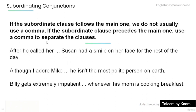Also remember: if the subordinate clause follows the main one, we do not usually use a comma. And if the subordinate clause precedes the main one, make sure to use a comma to separate the clauses. Now read the following sentences and fill in the blanks using the appropriate punctuation. 'After he called her, Susan had a smile on her face for the rest of the day' — comma. 'Although I adore Mike, he isn't the most polite person on earth' — comma. 'Billy gets extremely impatient whenever his mom's cooking breakfast' — no comma.